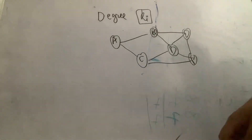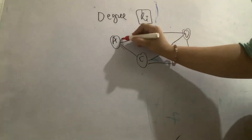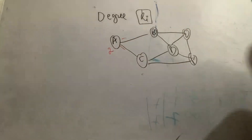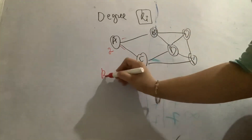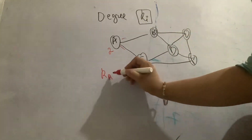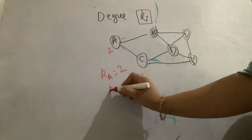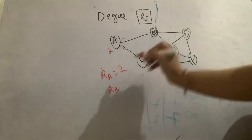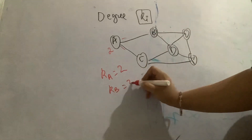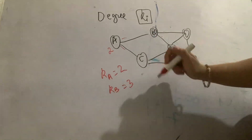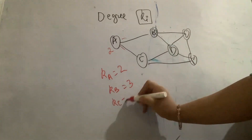For example, degree of node A — it has two links connected to it, so the degree of node A is equal to 2. Similarly, degree of node B is equal to 3. Degree of node C is equal to 3.